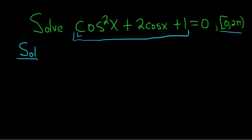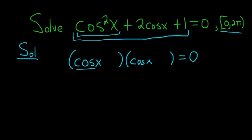You'll notice this cosine squared term here. So if it factors, it's probably going to look like this: cosine x times cosine x, and this is equal to 0. The reason is cosine x times cosine x is cosine squared x. This means the same thing - this is cosine x quantity squared.